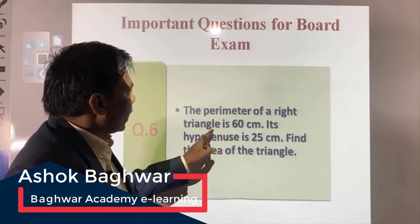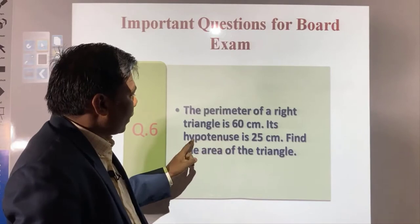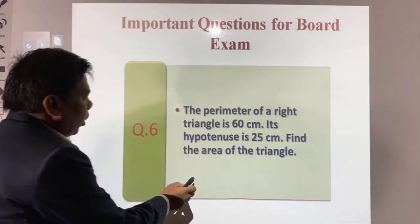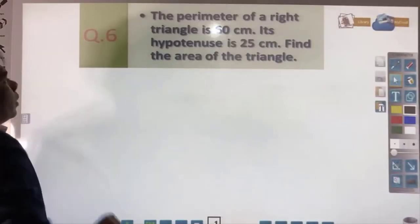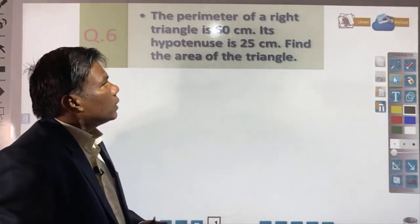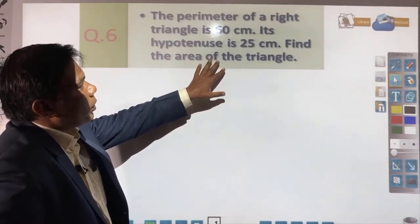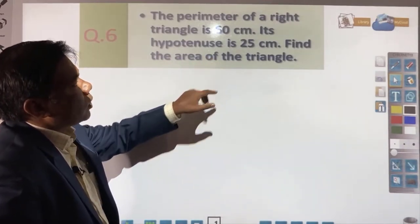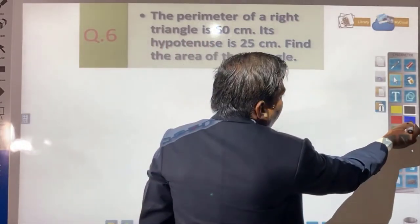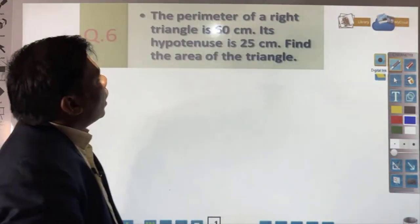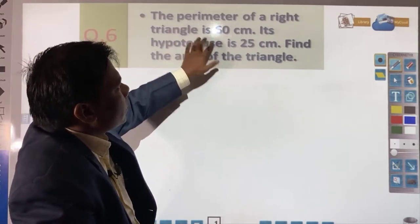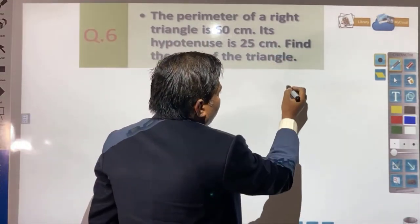The perimeter of a right triangle is 60 centimeters and its hypotenuse is 25 centimeters — find the area of the triangle. Let us see how we will solve this question. First, try to understand what the question is saying and how we will proceed. The perimeter of the triangle is 60 centimeters and the hypotenuse is 25 centimeters, which means this is a right angle triangle.